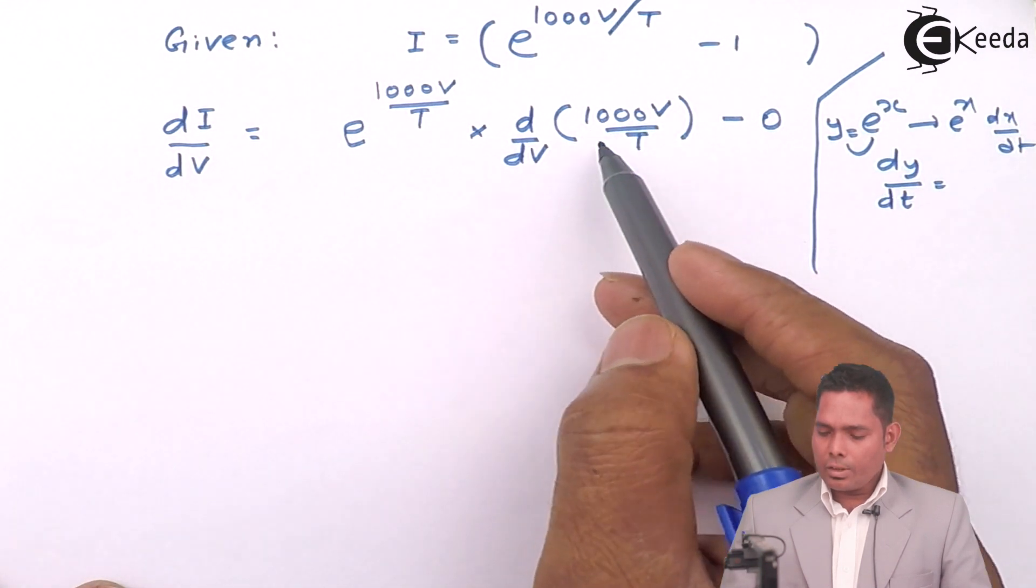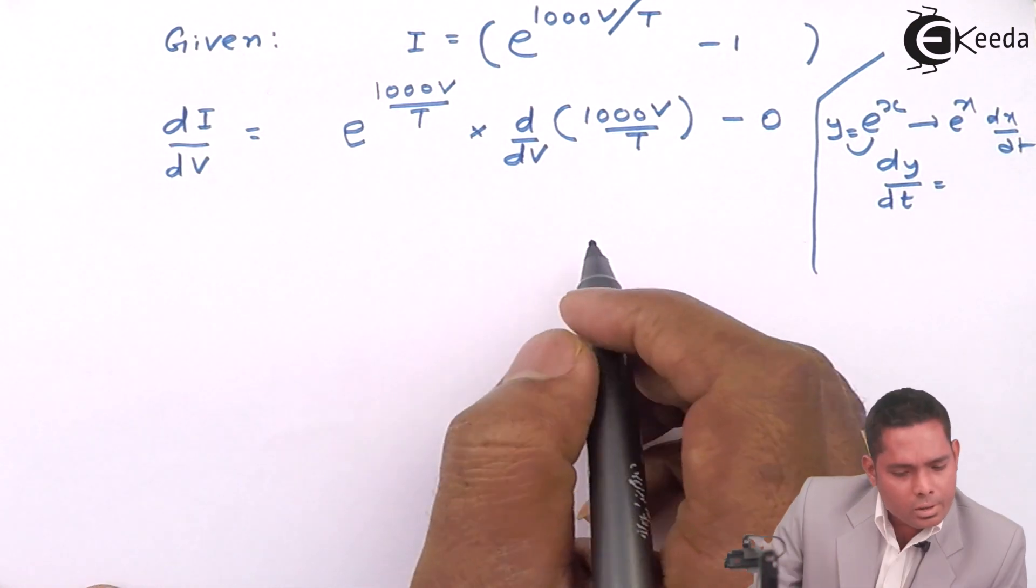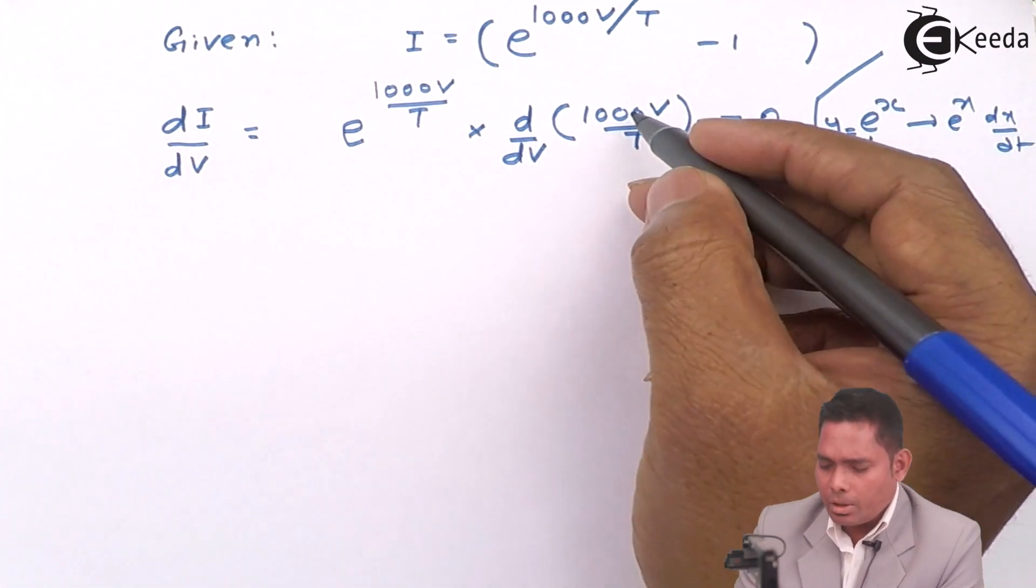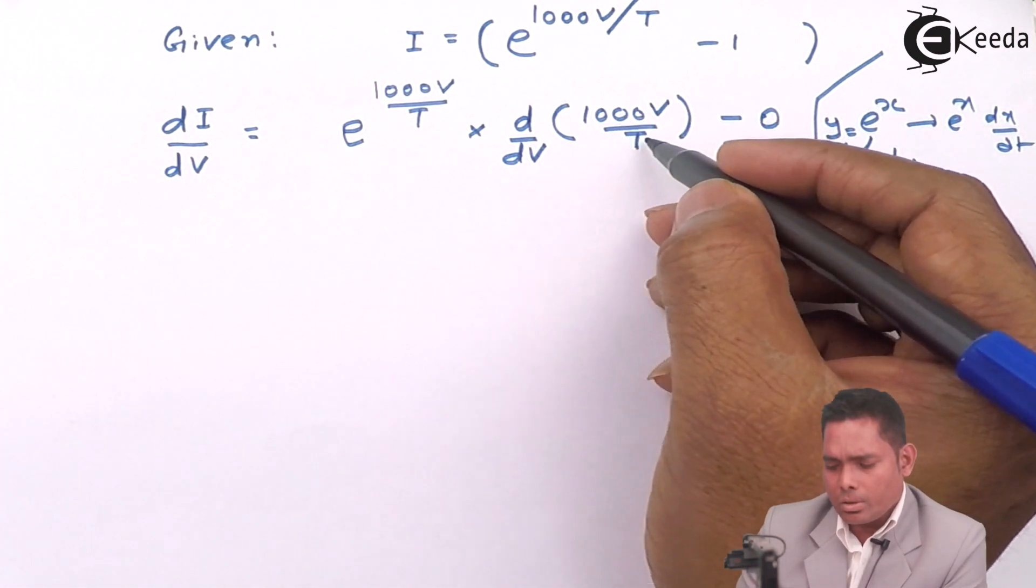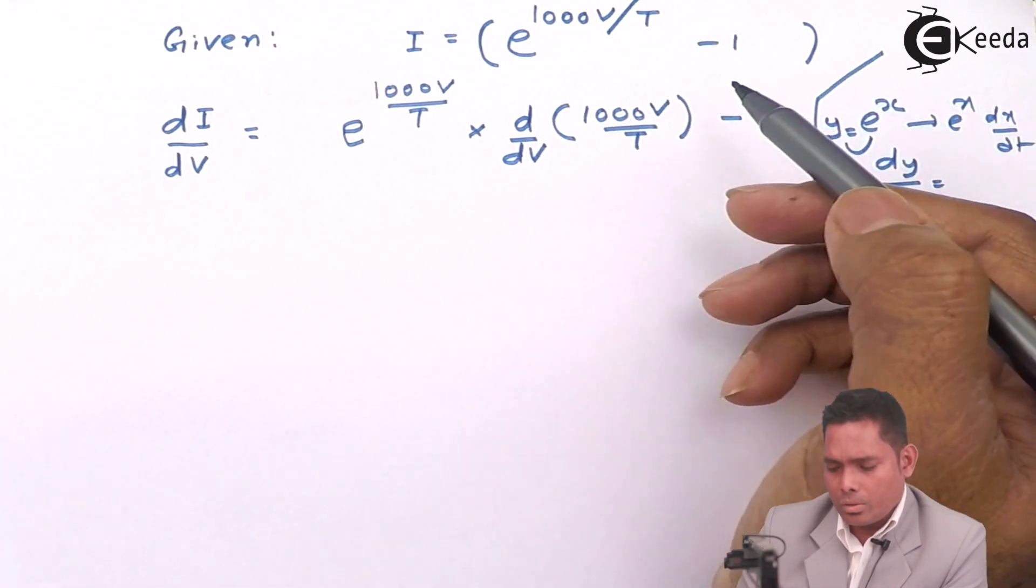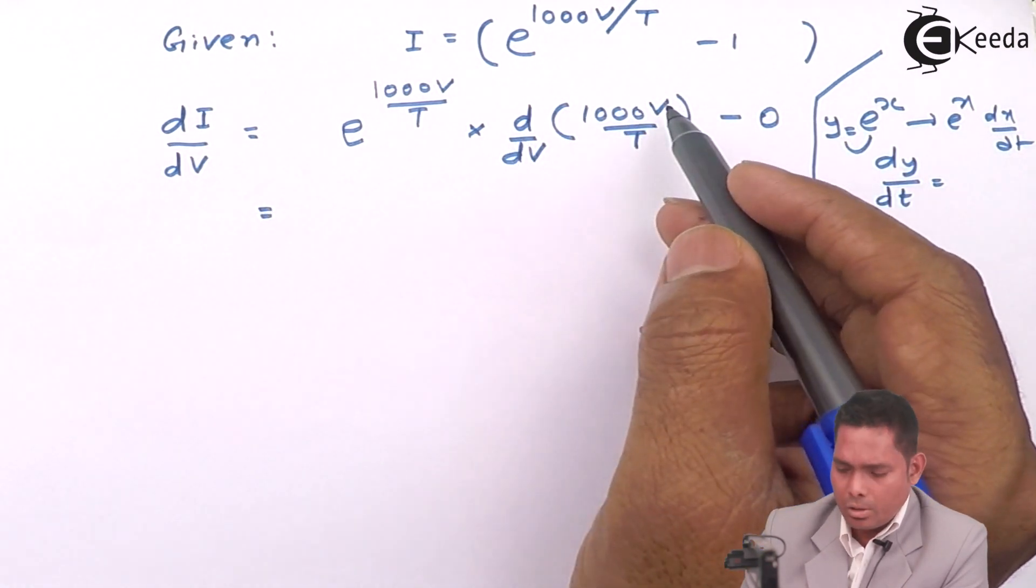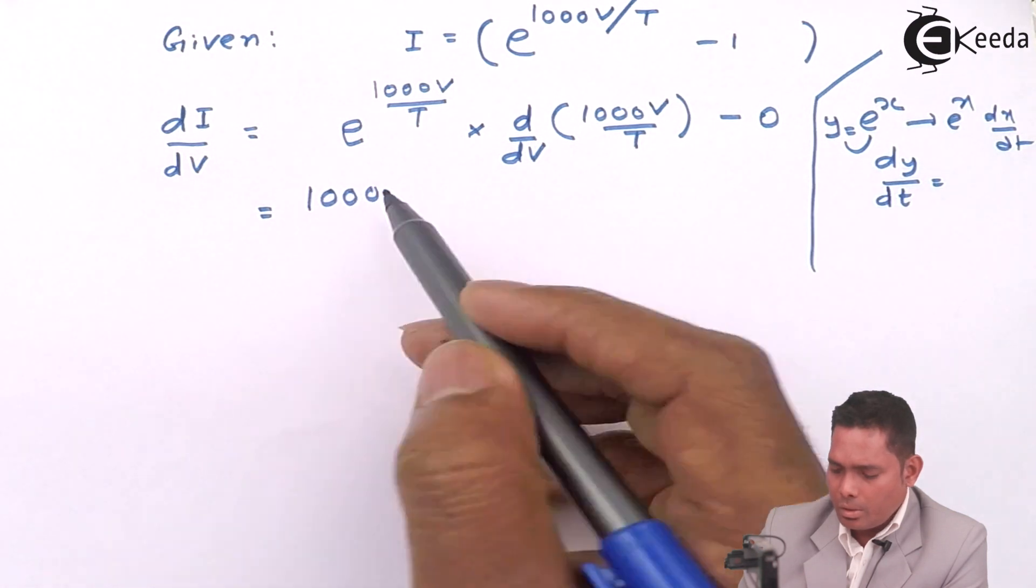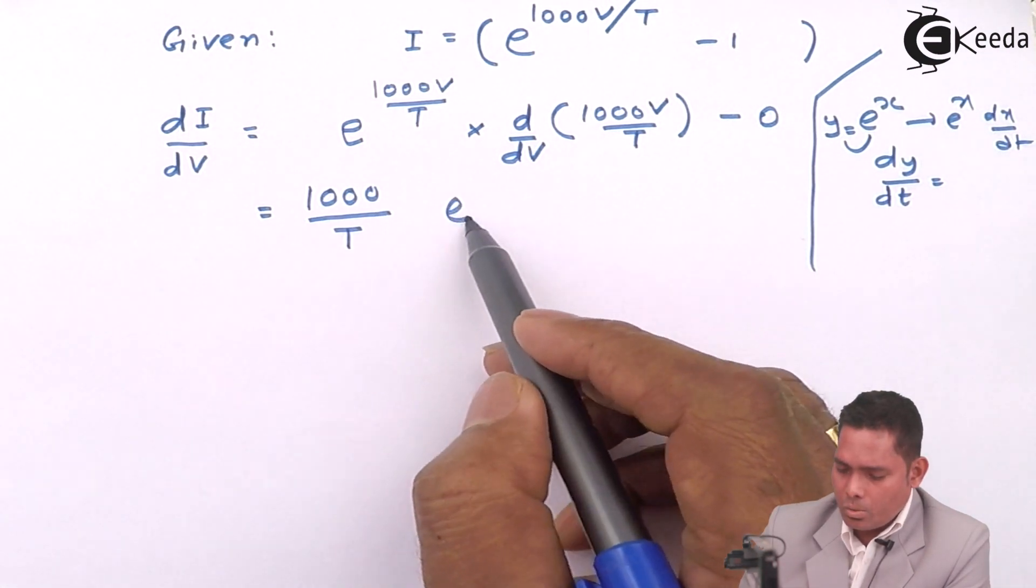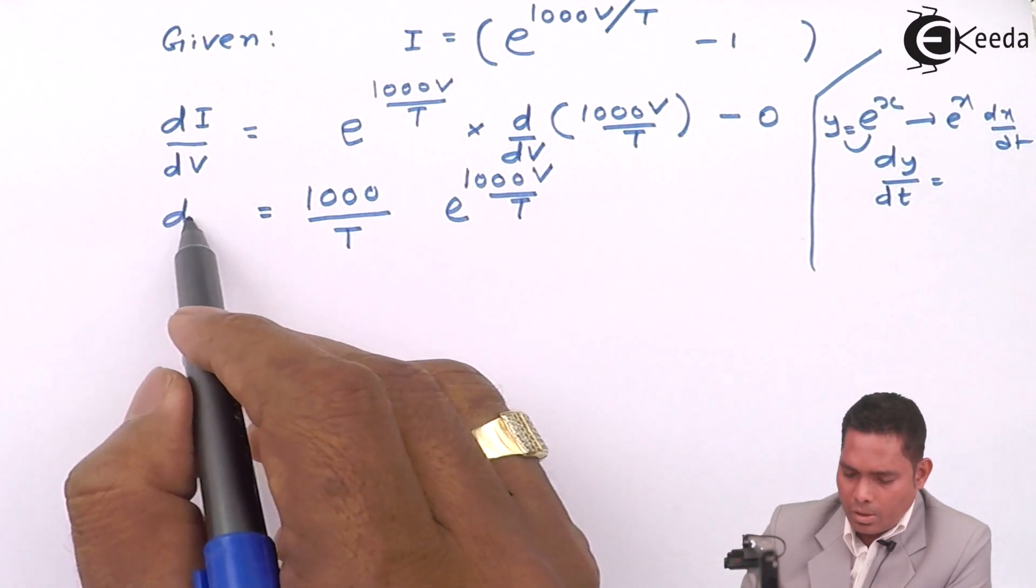So basically this whole thing will become 1000/T times e raised to 1000V/T. This is your dI/dV. Once you get this dI/dV, then from here I will get dI.